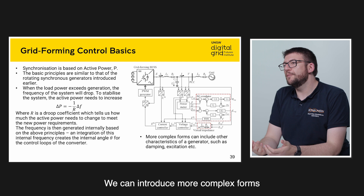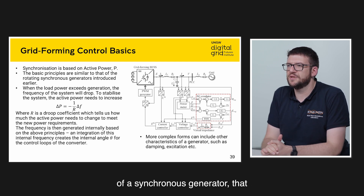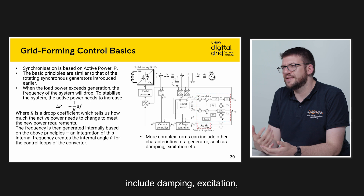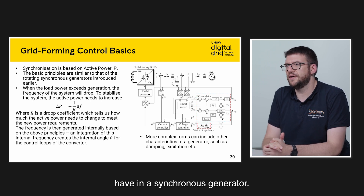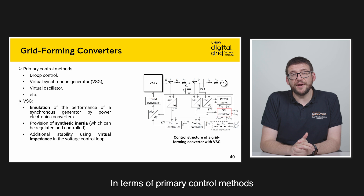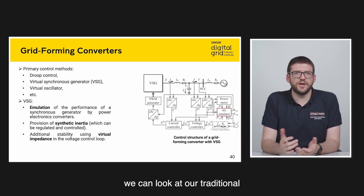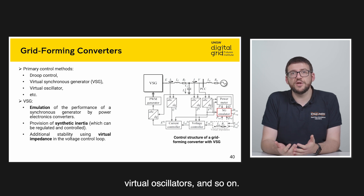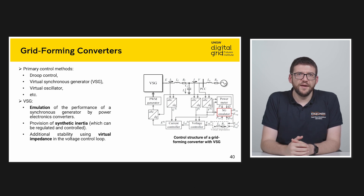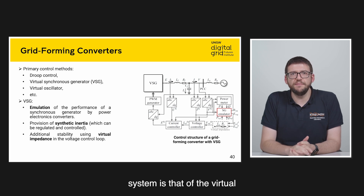We can introduce more complex forms of grid-forming converters that are able to emulate the characteristics of a synchronous generator, including damping, excitation, or any other controller that we have in a synchronous generator. In terms of primary control methods introduced in a grid-forming converter, we can look at traditional droop control, but we can also see virtual synchronous generators, virtual oscillators, and so on. The one that we see as more promising in implementation on a power system is that of the virtual synchronous generator, or VSG.